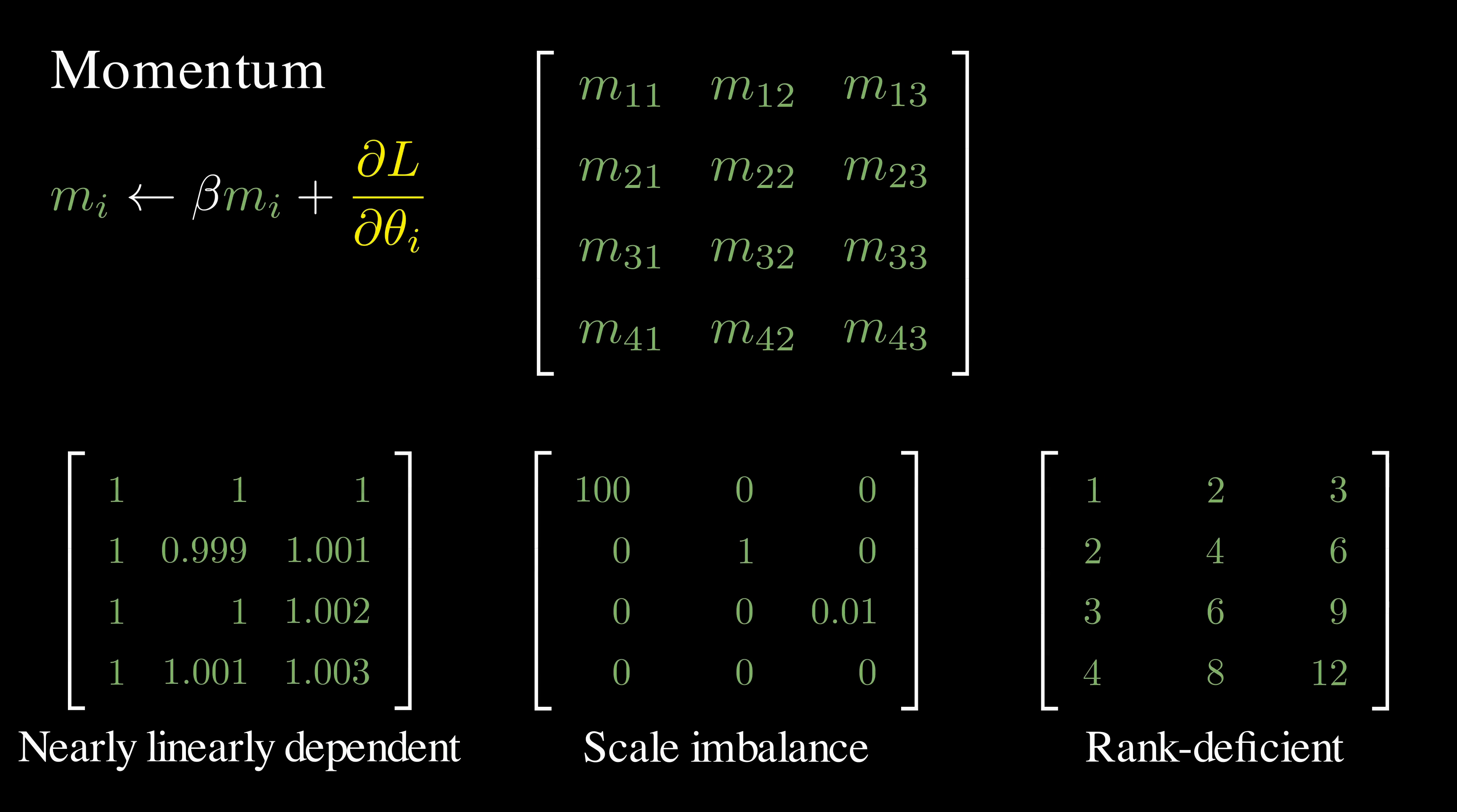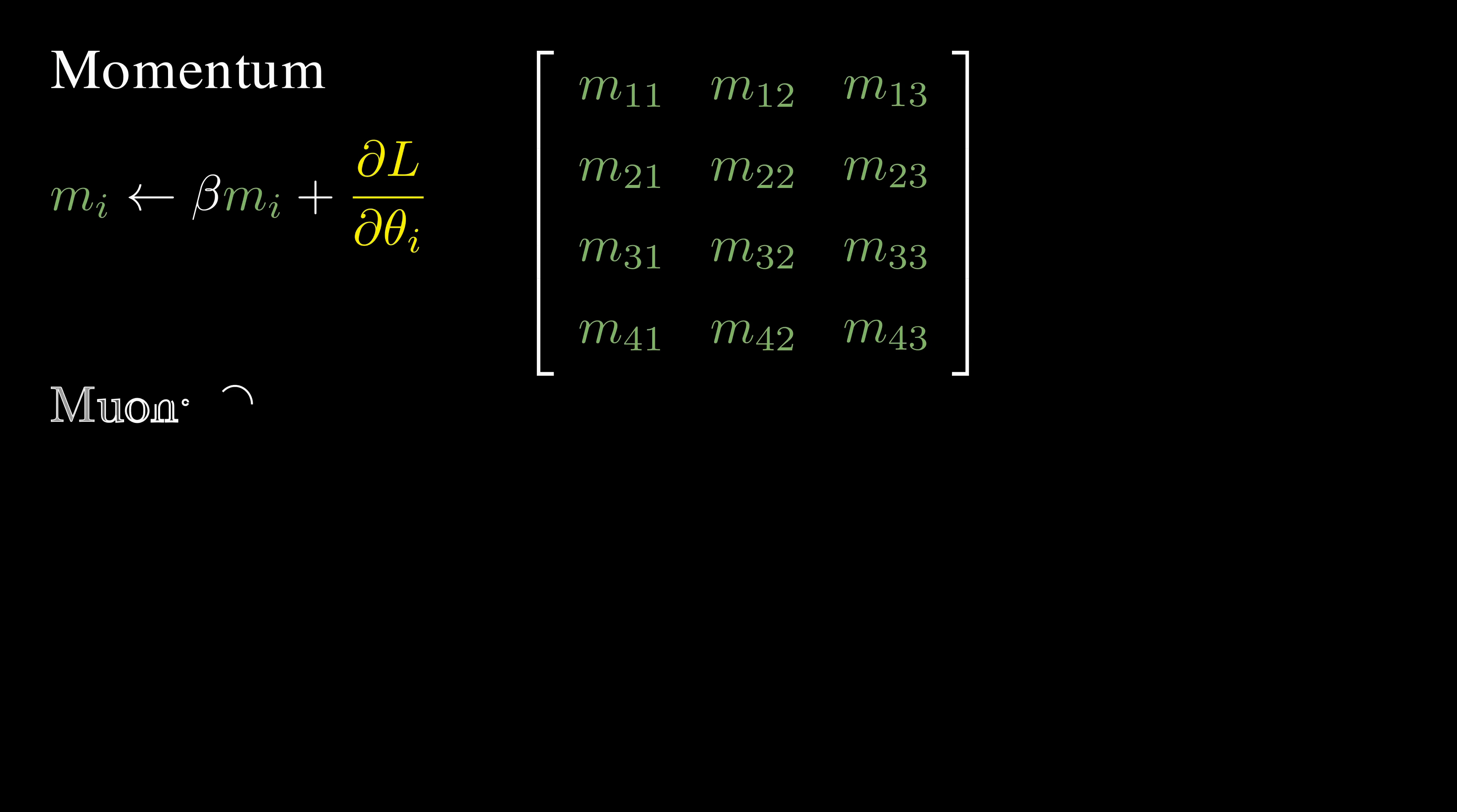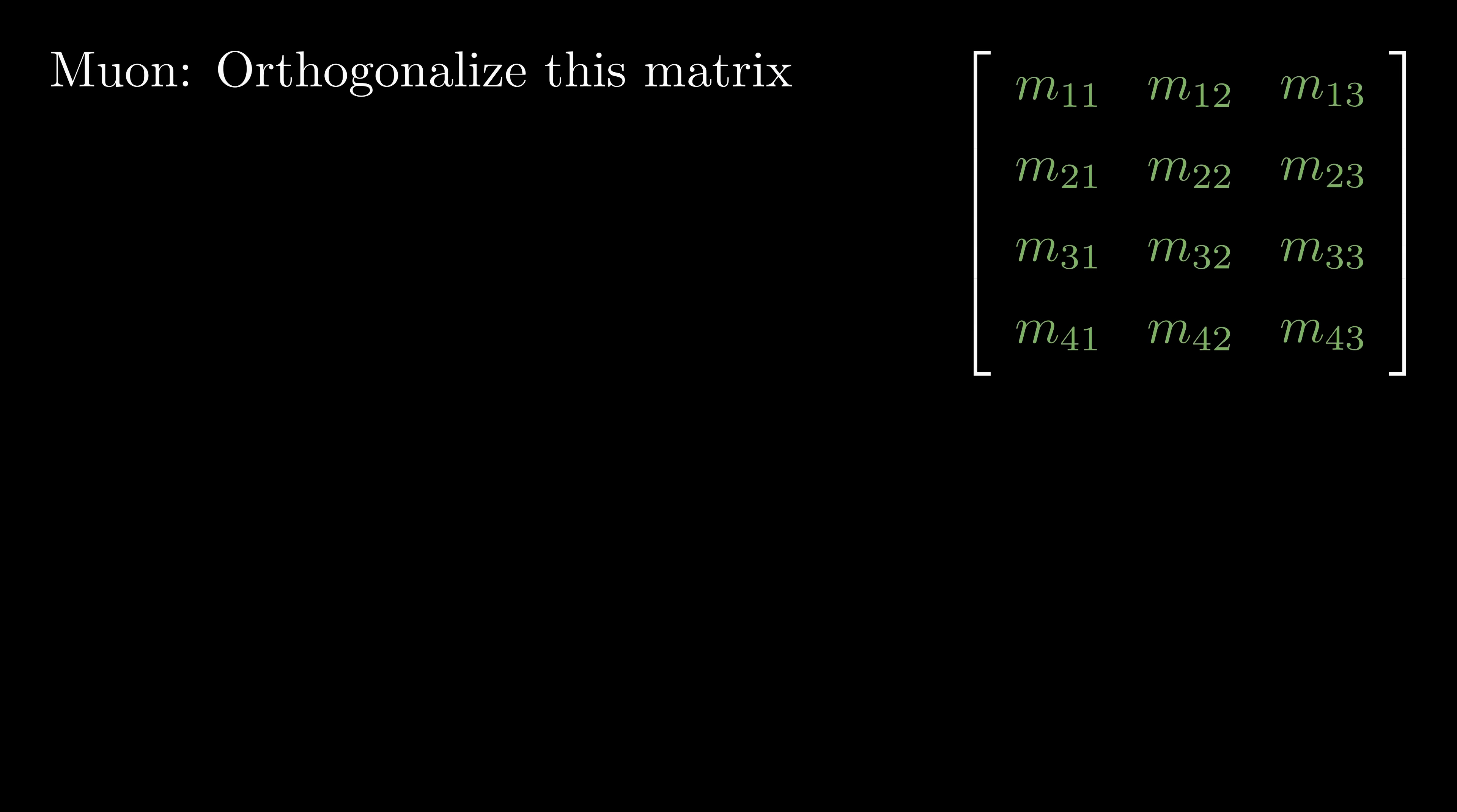The muon optimizer tackles this issue by orthogonalizing the momentum matrices. By doing so, muon amplifies the effect of rare directions, the directions that typically receive small or infrequent updates. Even though these rare directions seem minor, they are often essential for effective learning and can help capture more nuanced patterns in the data.